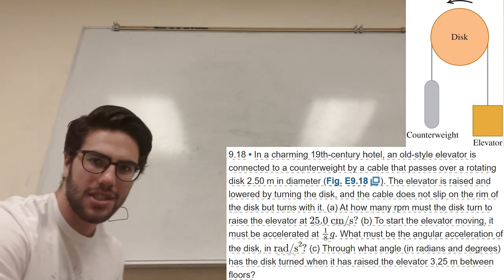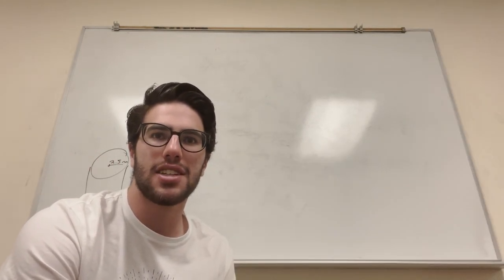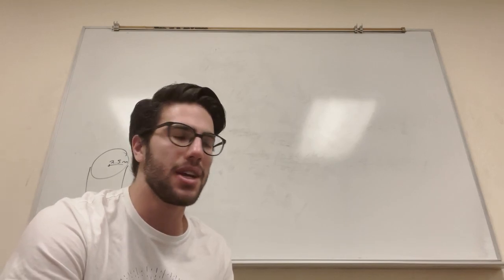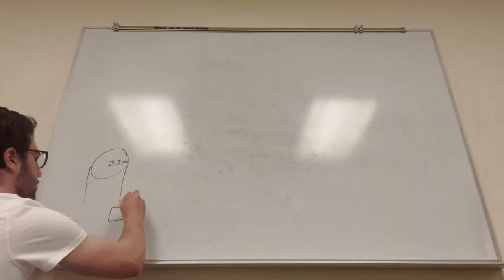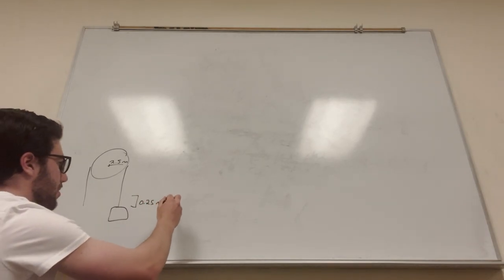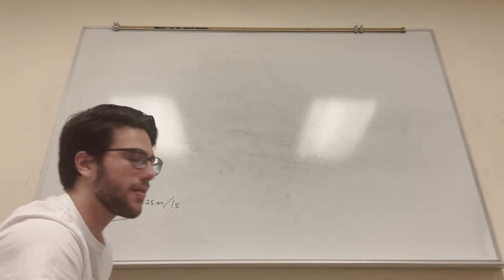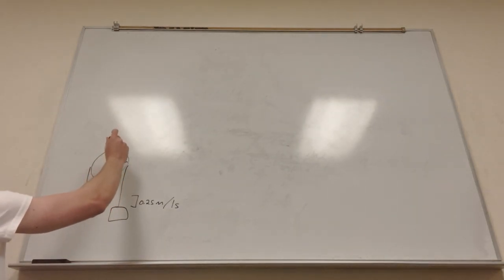So let's start with problem one. Okay, so at how many rates per minute must the disc turn to raise the elevator by 25 centimeters? Okay, so we want to go up 0.25 meters. And it wants to know, per second? Yeah, per second. Okay, so it needs to know what's the angular velocity going to be for that to happen.